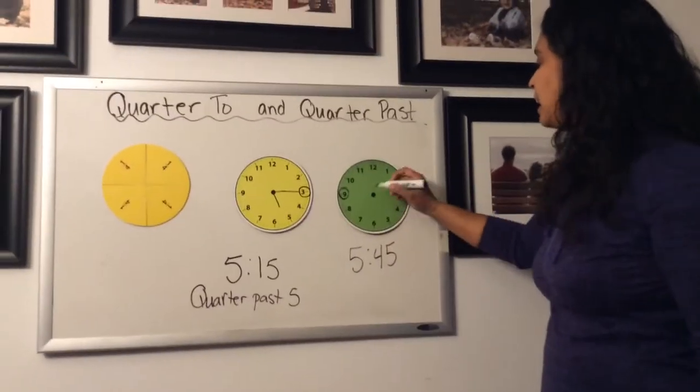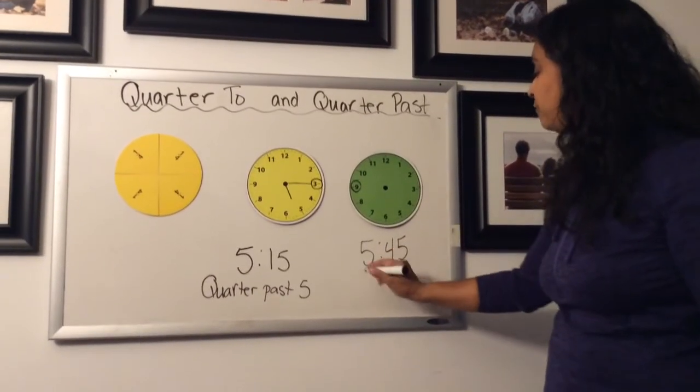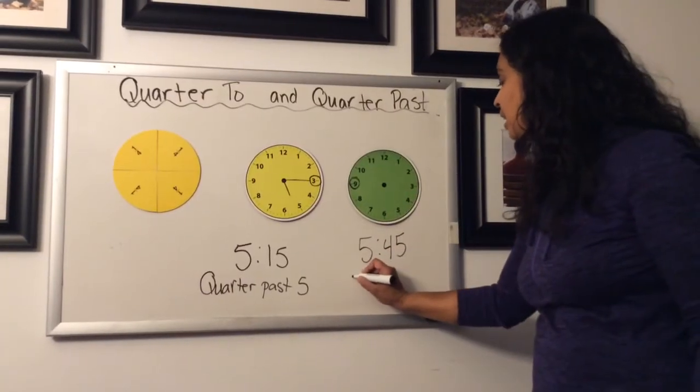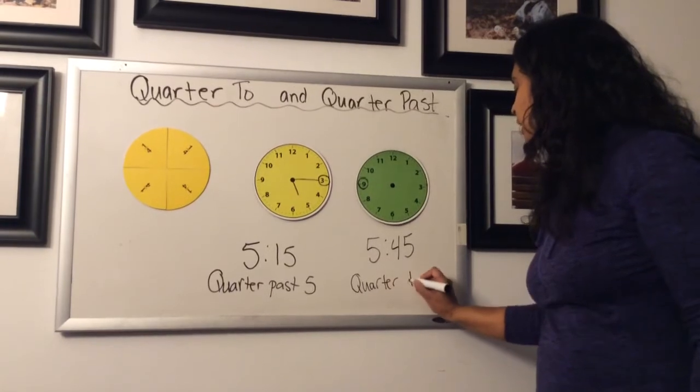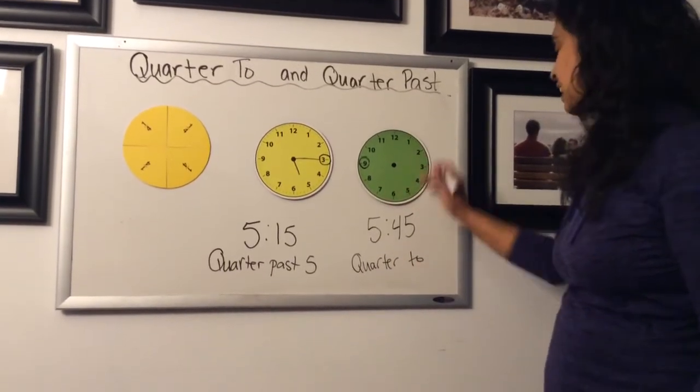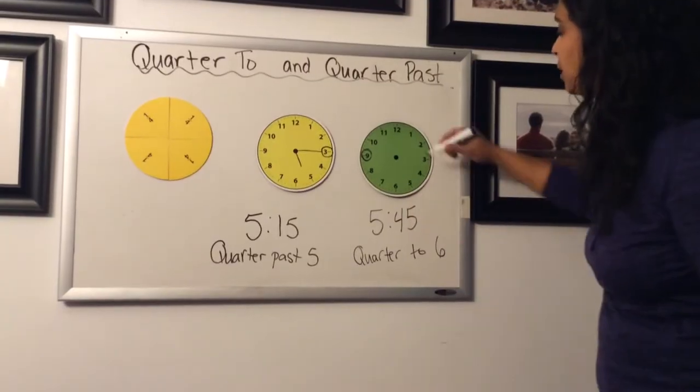If the minute is 45, that means that we are quarter to the next hour. We would say quarter to six. If the hour is five now, it's going to be six.